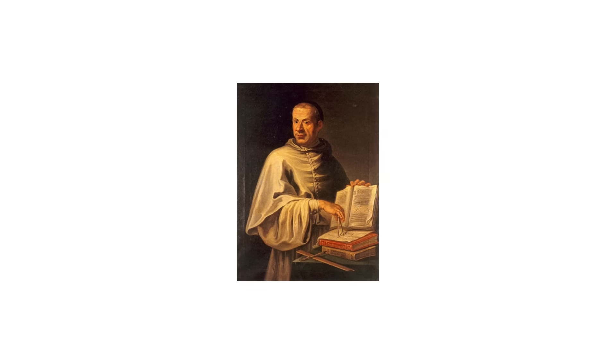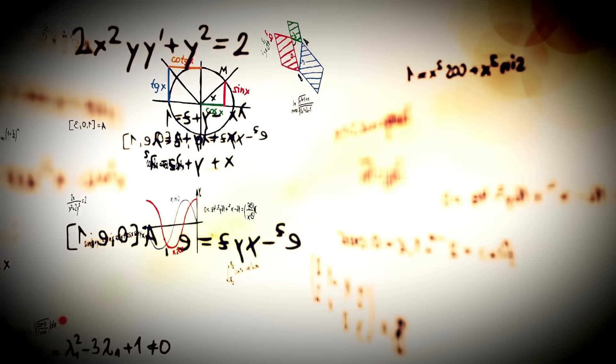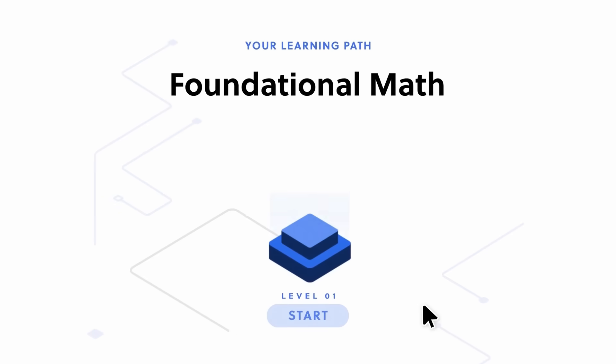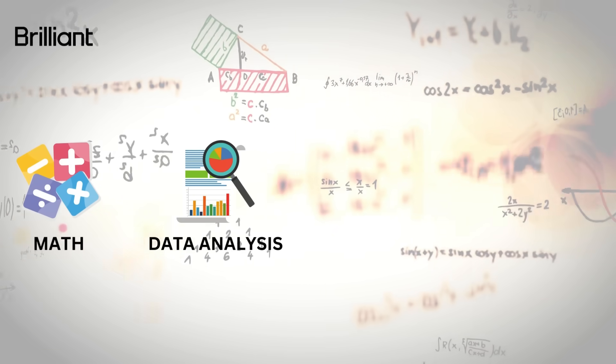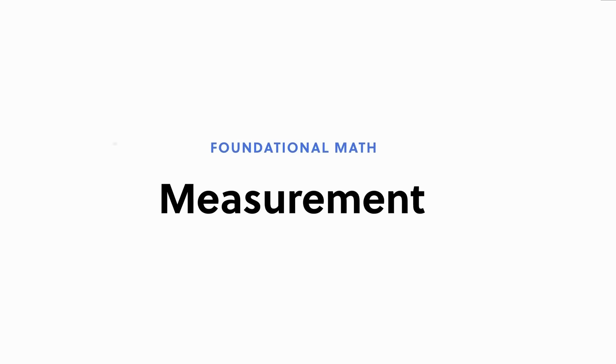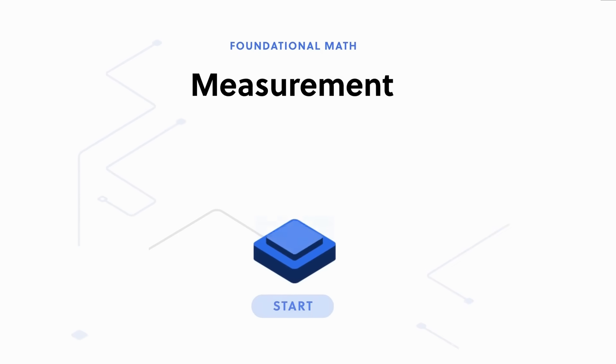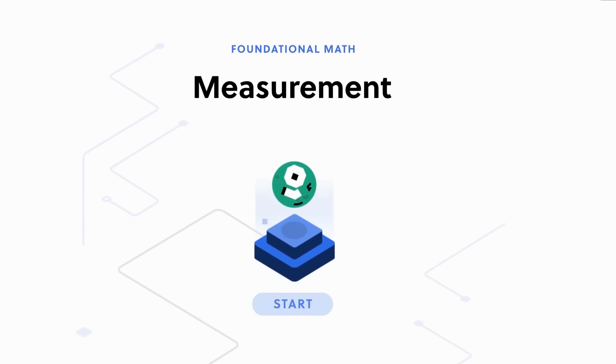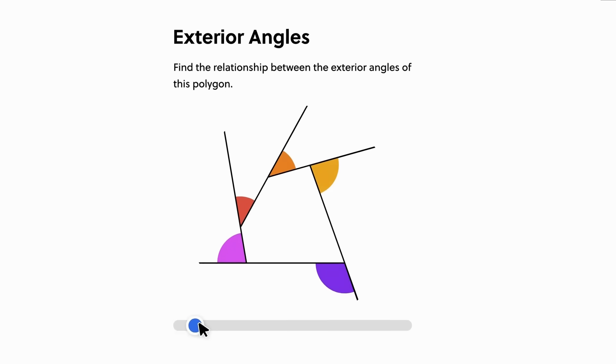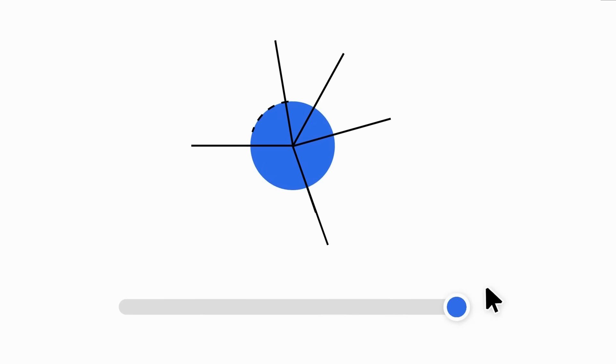If you want to build your mathematical skills, check out this video sponsor, Brilliant. Brilliant is a learning platform with a hands-on approach, hosting thousands of interactive lessons in math, data analysis, programming, and even AI. All content featured on Brilliant has been created by award-winning professionals from MIT, Caltech, Duke, Microsoft, Google, and more.